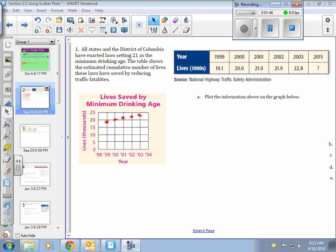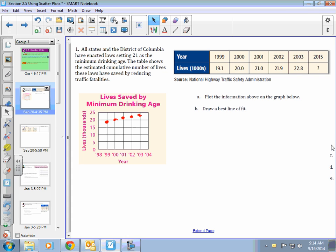For part A, plot the information above on the graph. I have already done that. Part B, we need to draw a best line of fit. Through our data points, what we want to do is draw a line that has equal amount of points above it and below it. Just try your best to go through as many points as you can. Mine looks like it goes through all of them, but in reality, it does not, because it's not an exactly perfect line.